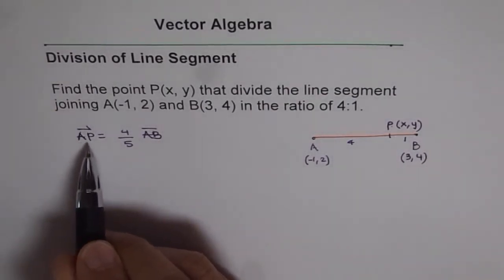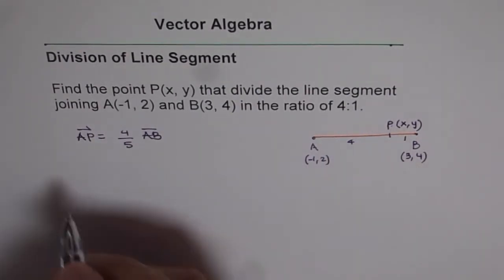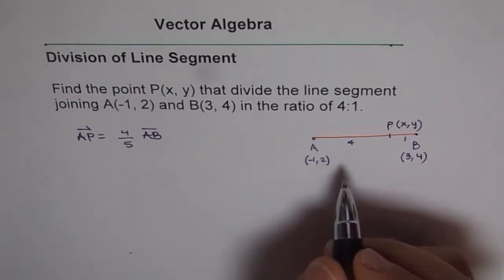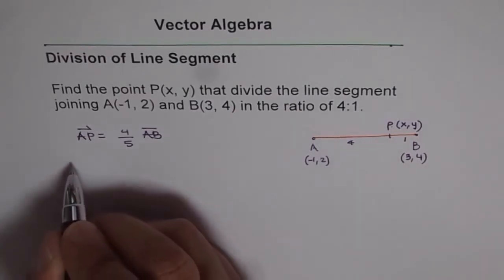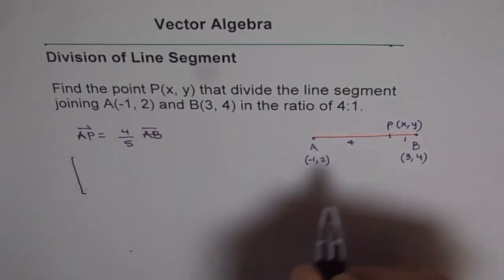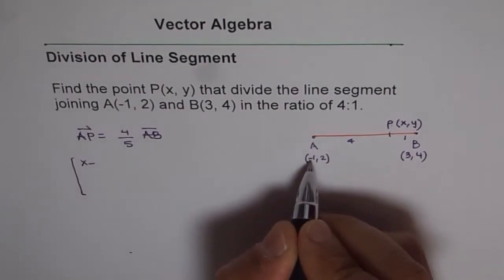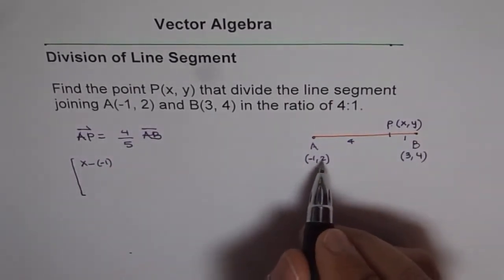Now, what is AP? We can write AP as - I will now use matrix form of the representation to solve this question. So AP can be written as X minus minus 1, the X coordinate and Y minus 2.